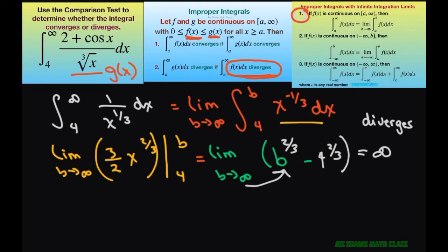So we can write 1 divided by x to the 1 third is less than or equal to 2 plus cosine of x divided by x to the 1 third.